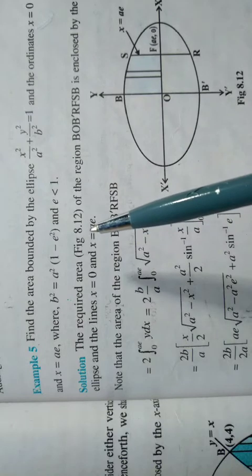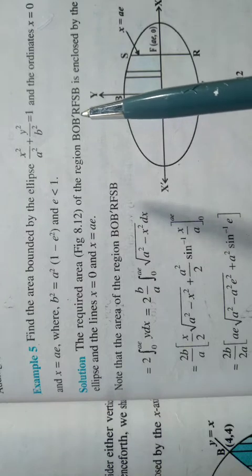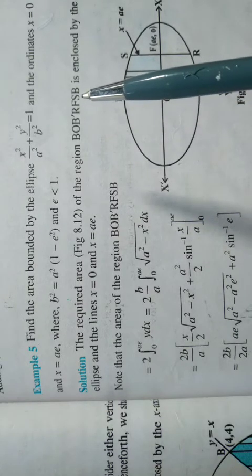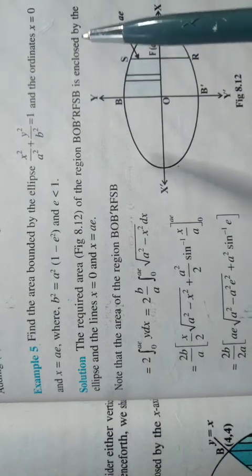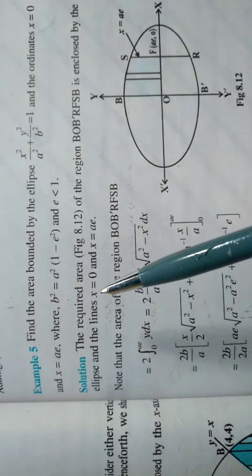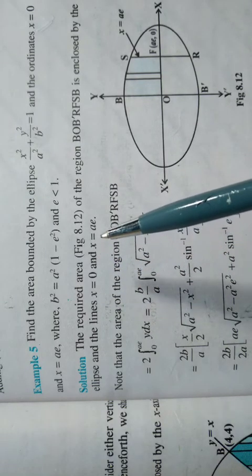The required area of the region BOBDSRFCSCB is enclosed by the ellipse and the line x is equal to 0 and x is equal to ae.